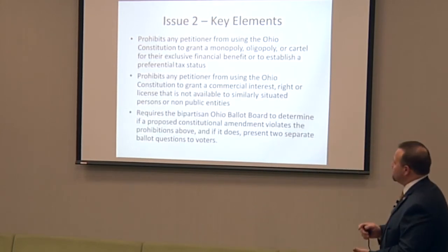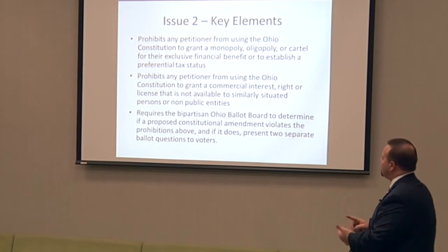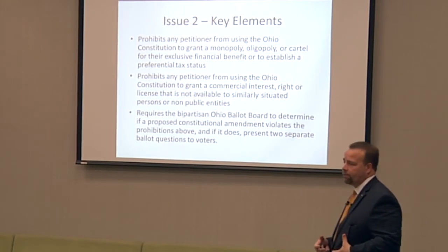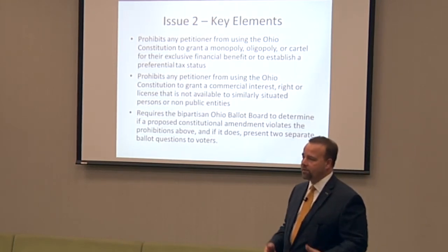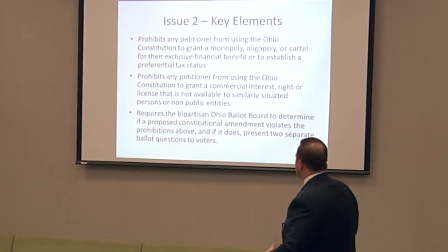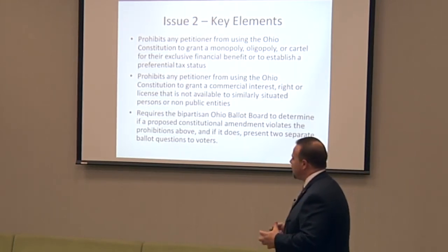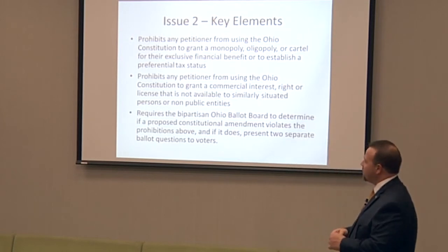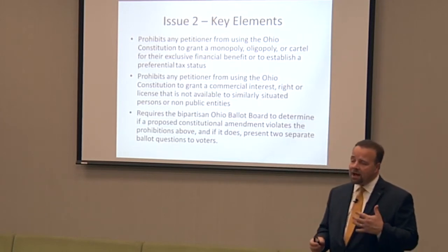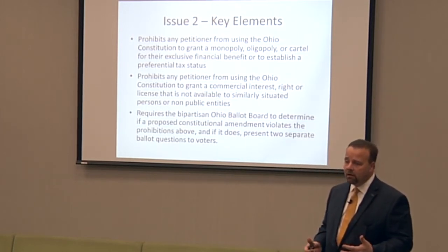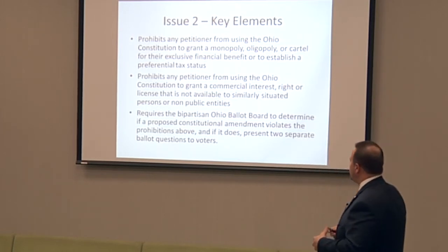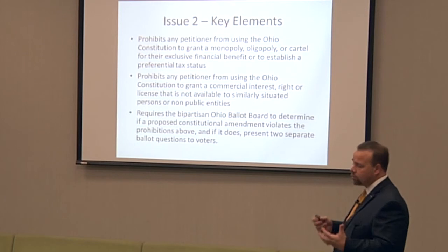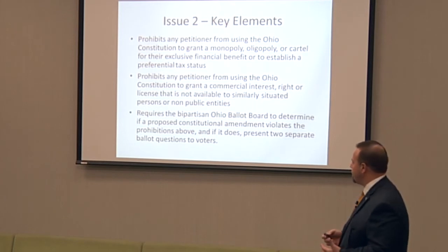So what does it do? It prohibits a petitioner — that's the folks who say they want to put something on the ballot — from doing anything in the Constitution that will grant a monopoly, oligopoly, or cartel that creates exclusive financial benefit for them.